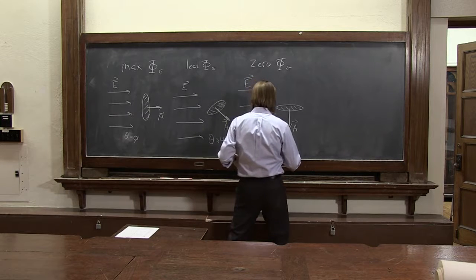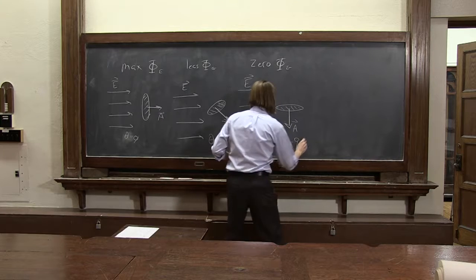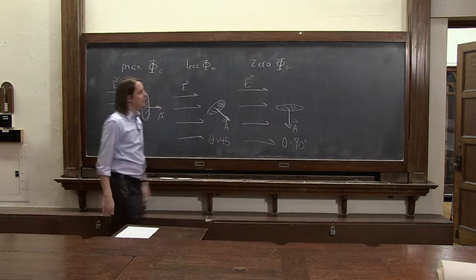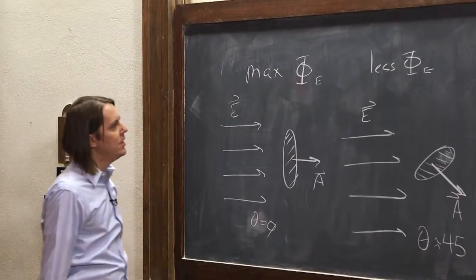They just see a flat, thin little thing. They don't get through because theta between the E field and the A is 90 degrees and the cosine of 90 is 0. So those are the three cases.